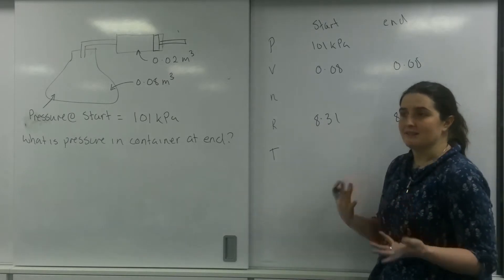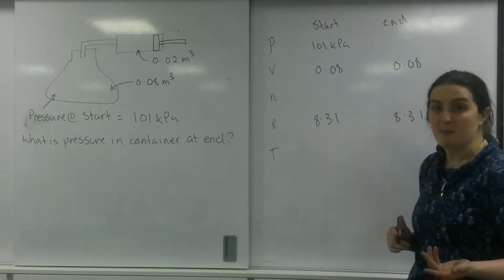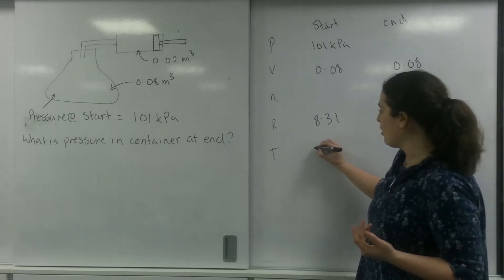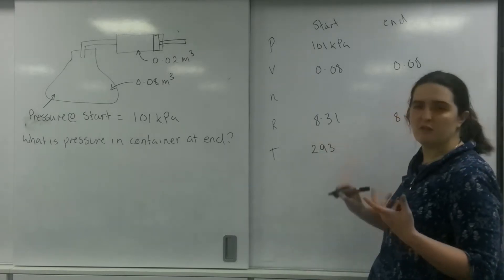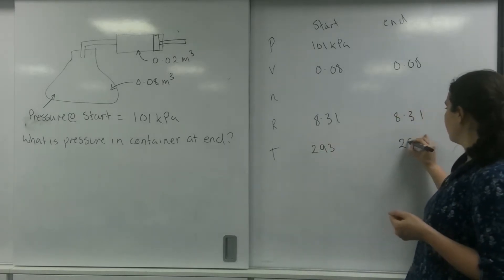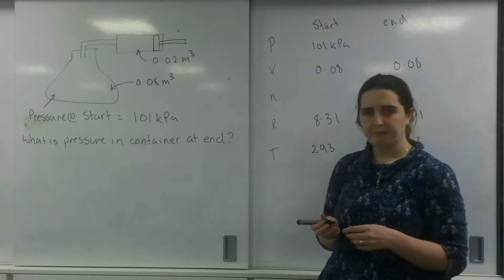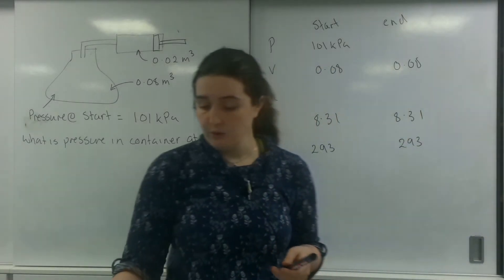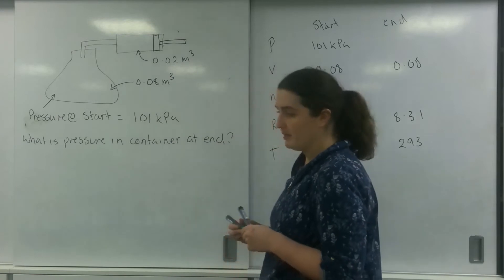And this is actually quite a neat little trick. Because I know it doesn't change, I'm going to actually make up a temperature. So I'm going to say I've got 293. I've got 20 degrees C here. Because I know it is constant.